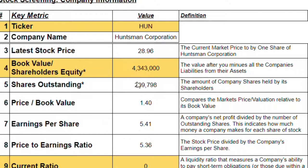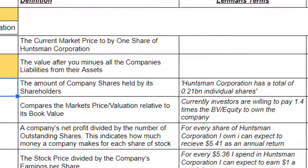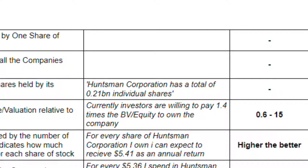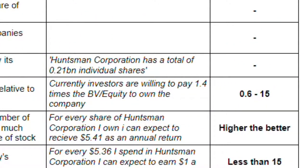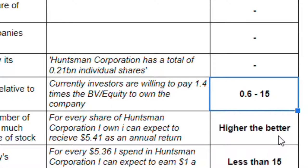Moving on, item five is shares outstanding — the amount of company shares held by its shareholders. This is automatically calculated: Huntsman Corporation has $0.21 billion in individual shares, equivalent to 210 million individual shares. Item six is the price-to-book value, which compares the market price of the company relative to the book value. We get a price-to-book value of 1.4, meaning investors are willing to pay 1.4 times the book value to own one share. The book recommends looking for a value between 0.6 and 15, and Huntsman passes — it's a really good number.